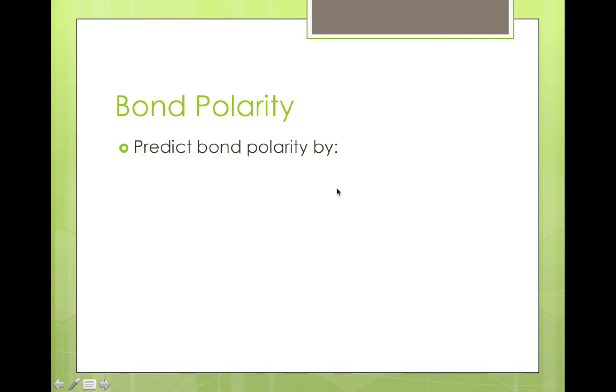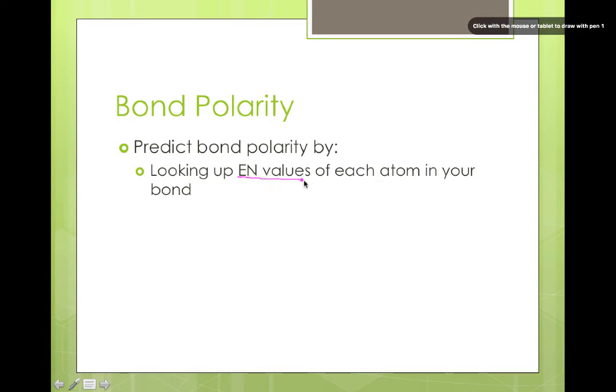Now that we have an idea of what bond polarity is, let's talk about the actual process of predicting bond polarity. This can be done by following a couple quick and easy steps. Once you've identified the bond you want to work with, you can start by looking up the electronegativity values for each of the individual atoms. Some periodic tables will actually have this data located on them. If your periodic table does not, there's a link to the bottom of the page of a website that lists electronegativities for all elements on the periodic table.